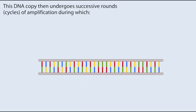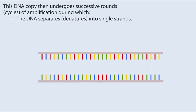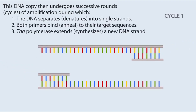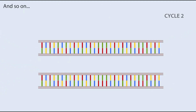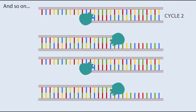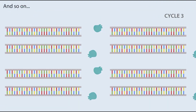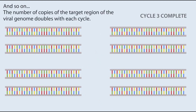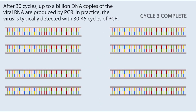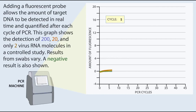This DNA copy then undergoes successive rounds — cycles — of amplification during which the DNA separates (denatures) into single strands, both primers bind (anneal) to their target sequences, and TAC polymerase extends and synthesizes a new DNA strand. The number of copies of the target region of the viral genome doubles with each cycle. After 30 cycles, up to a billion DNA copies of the viral RNA are produced. In practice, the virus is typically detected with 30 to 45 cycles of PCR. Adding a fluorescent probe allows the amount of target DNA to be detected in real time and quantified after each cycle.